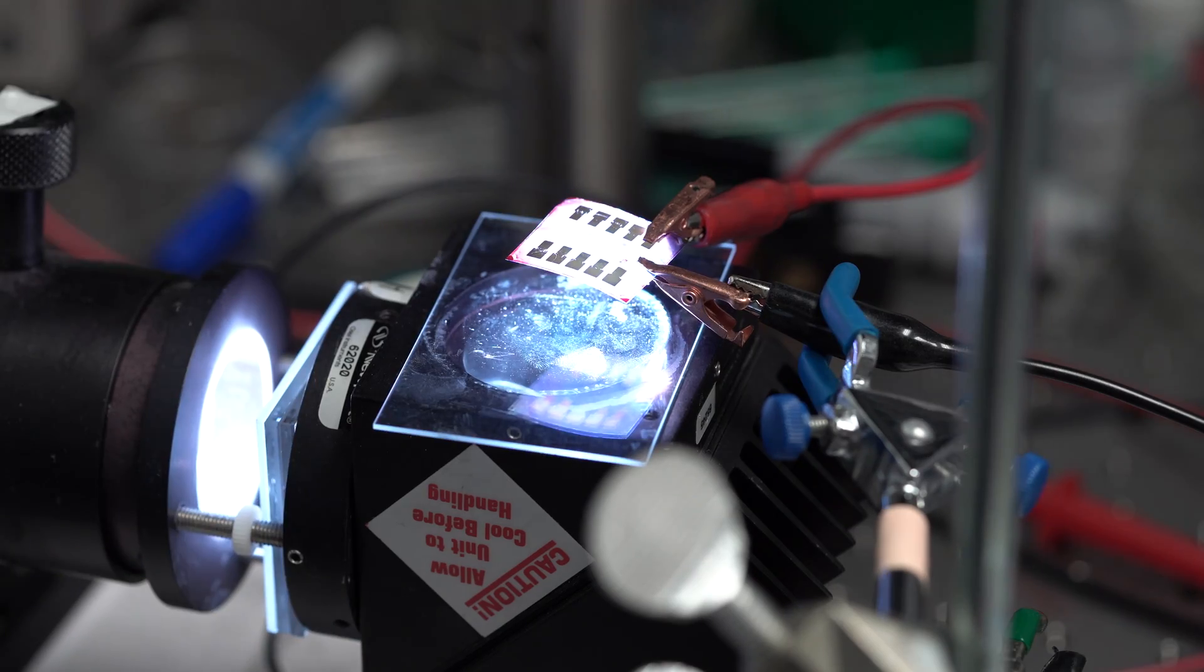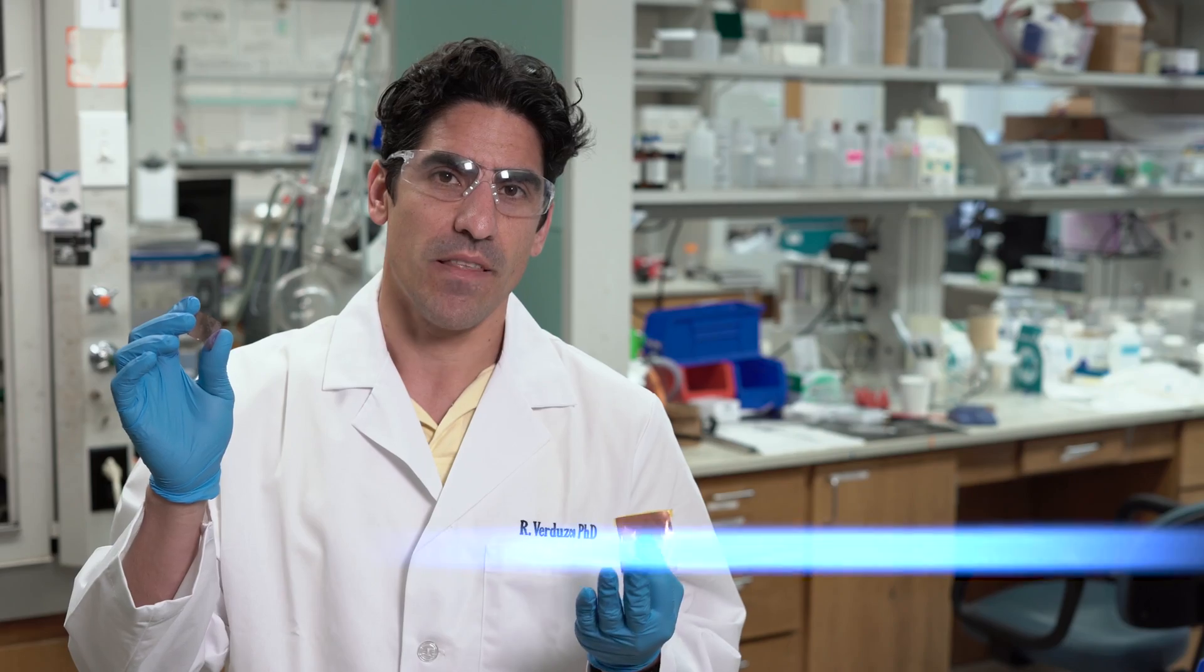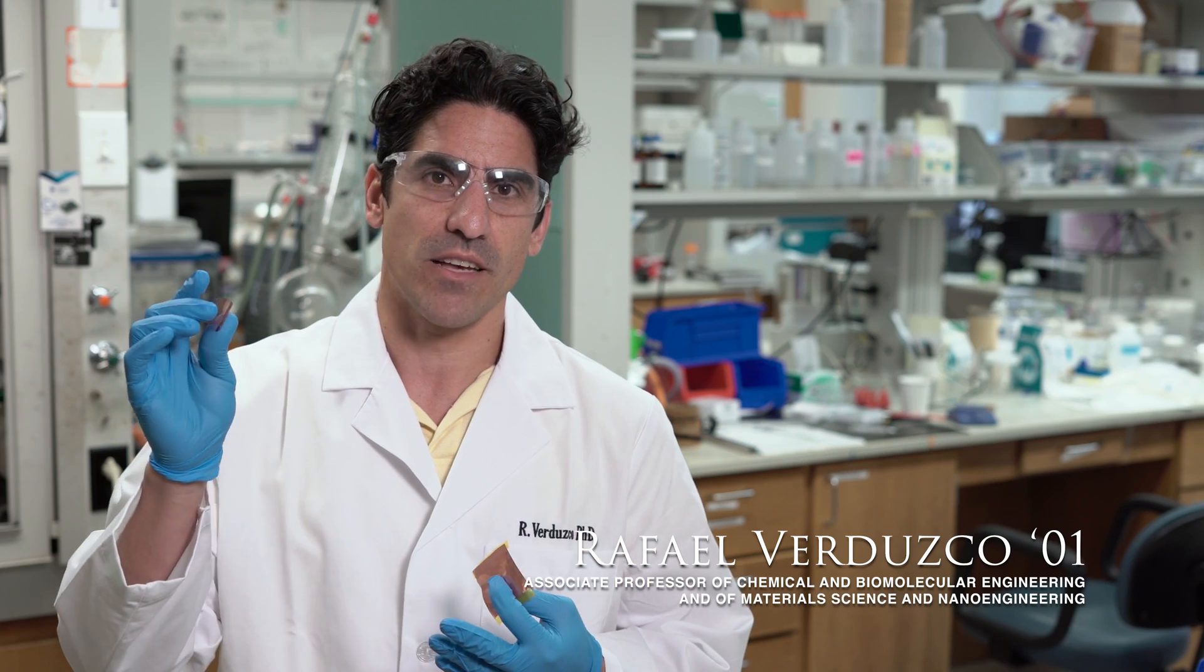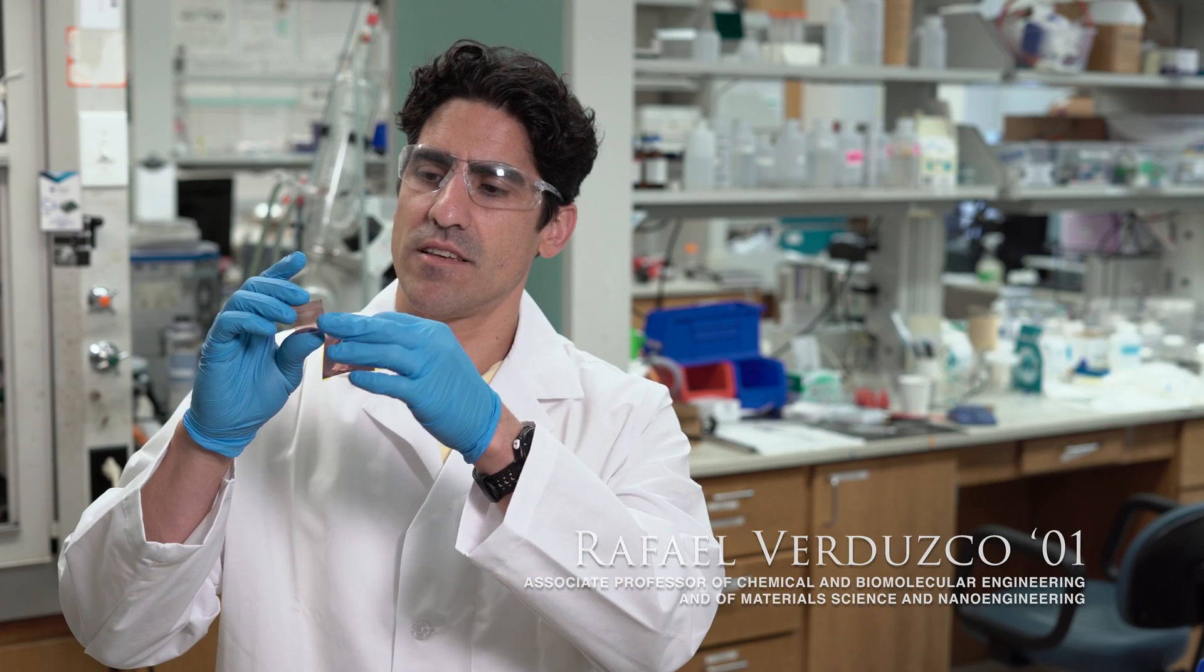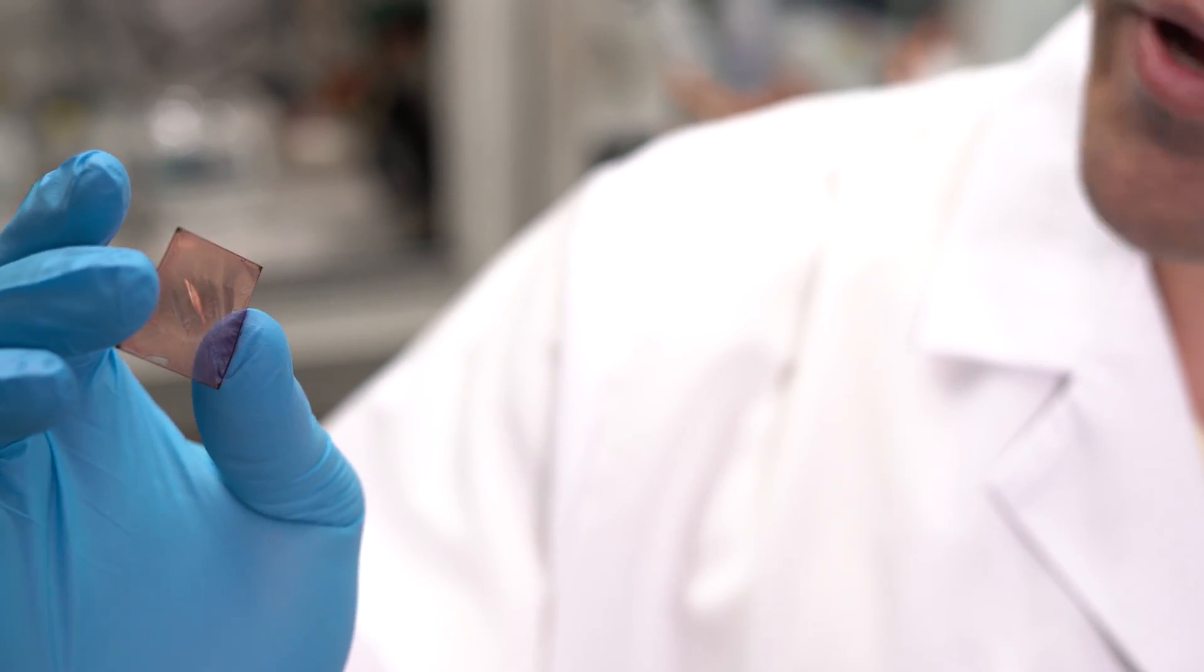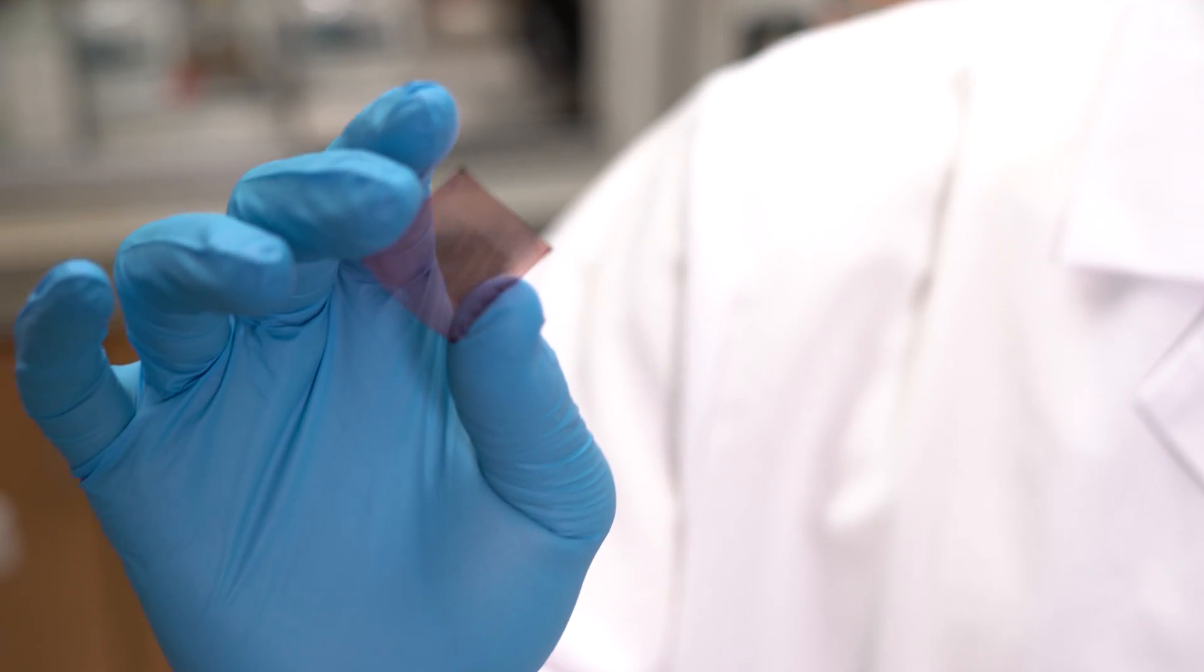What we're working on here is trying to make solar cells that are printable, paintable, and flexible. This is one device that we made here. This is made using organic materials. It's an example of an organic photovoltaic device.